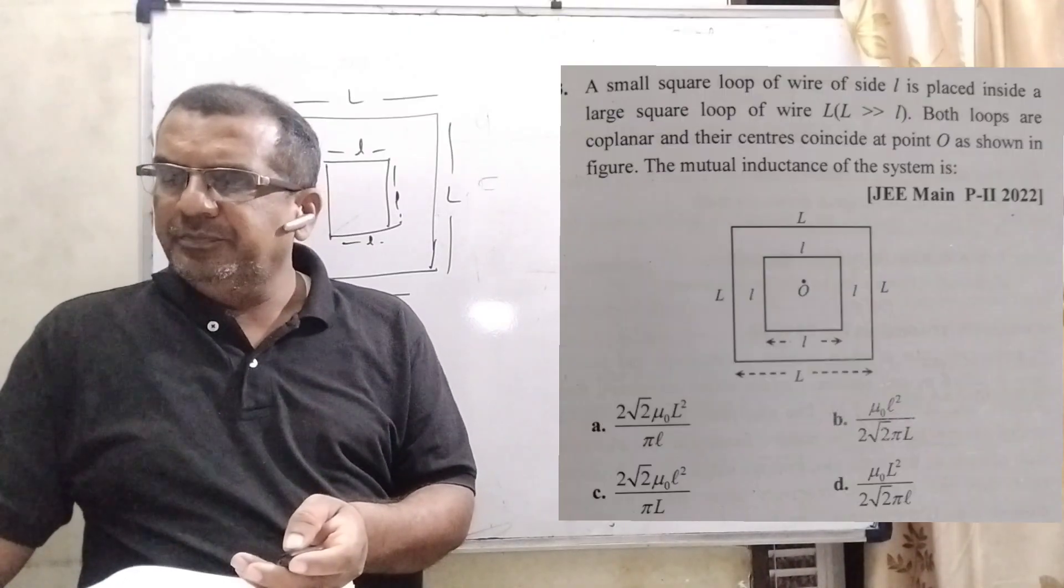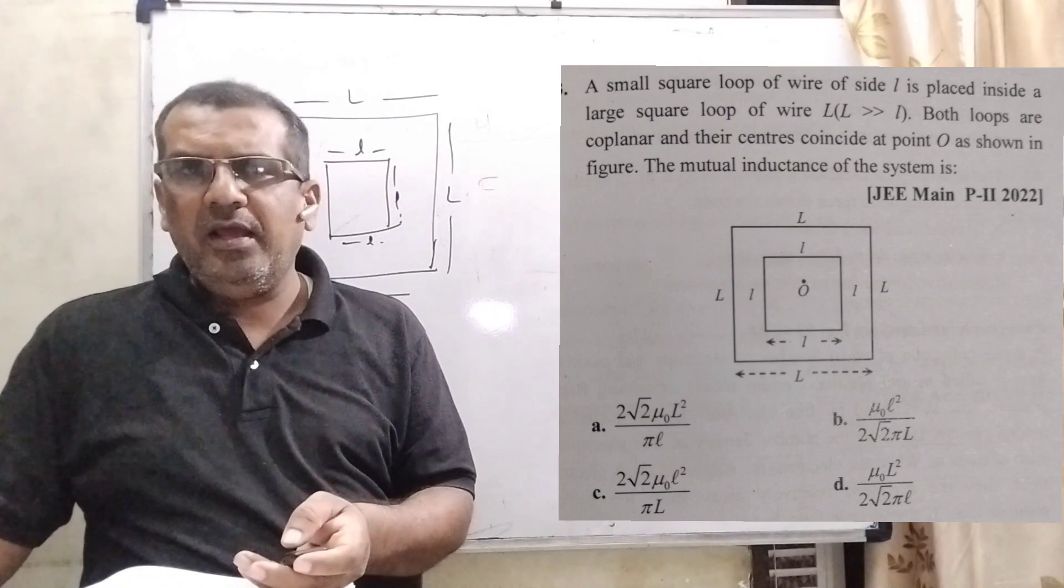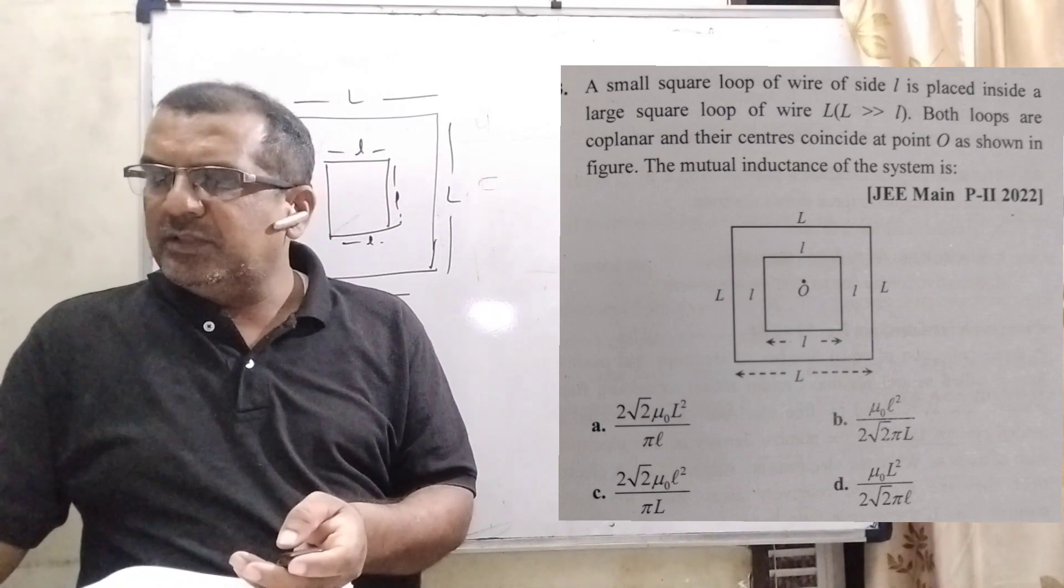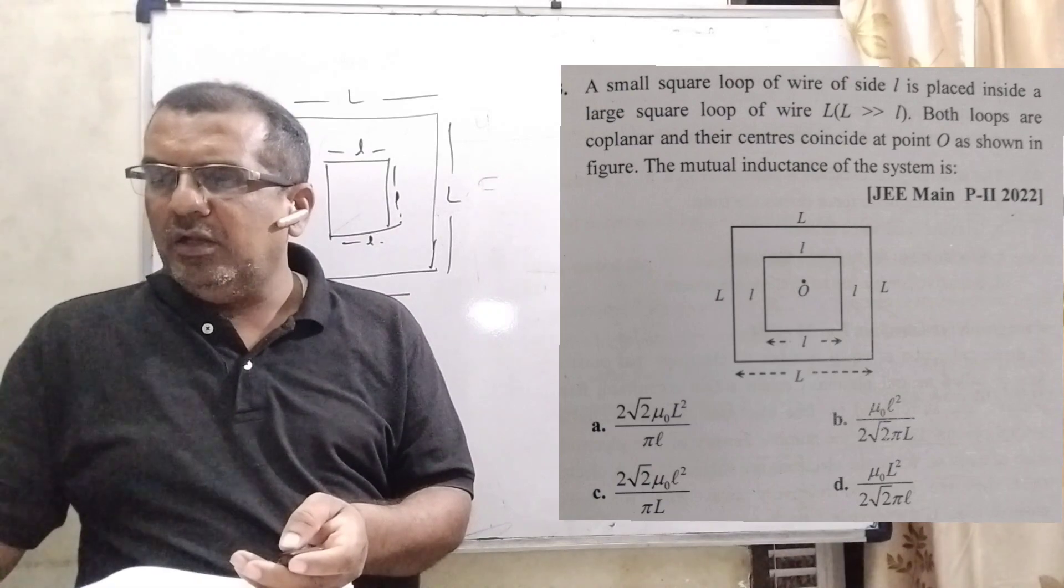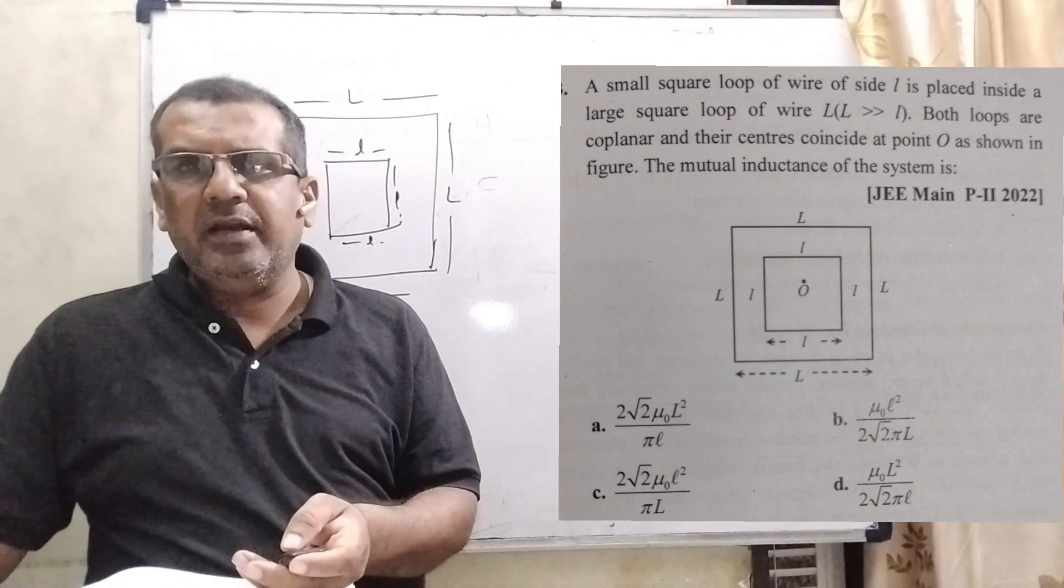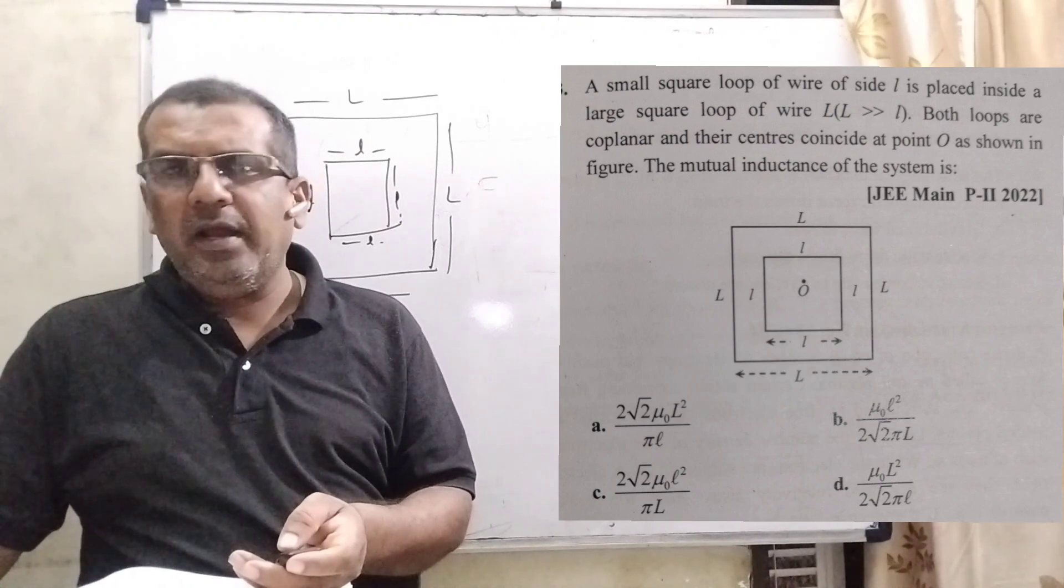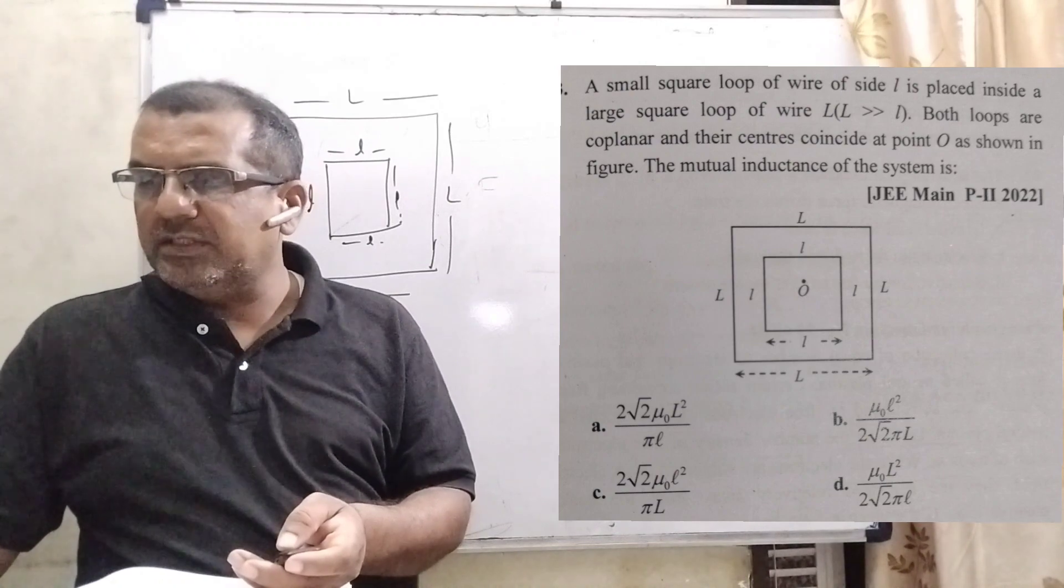Now here is the question. A small square loop of wire of side small L is placed inside a large square loop of wire of side capital L. Here capital L is greater than greater than small L. The loops are coplanar and their centers coincide.